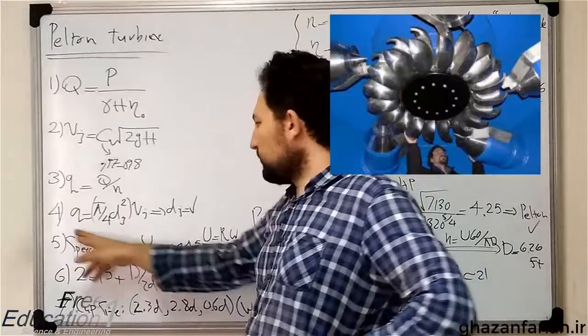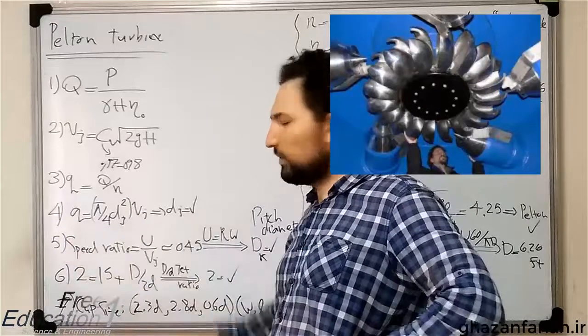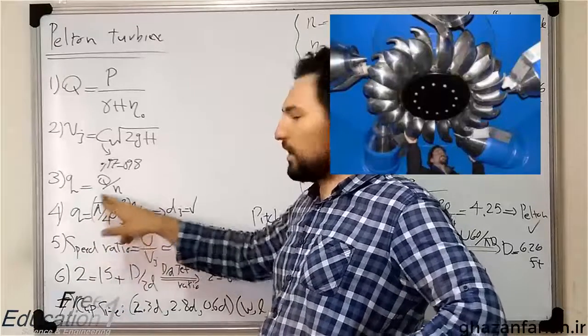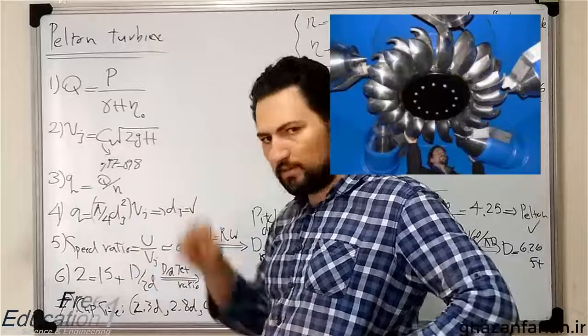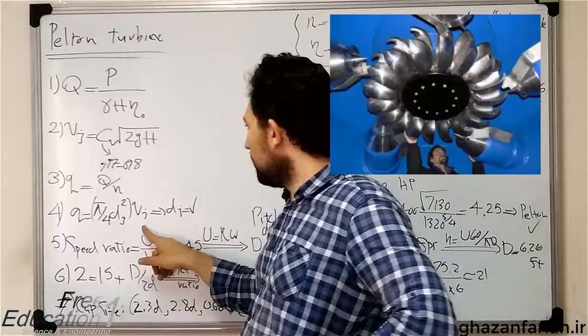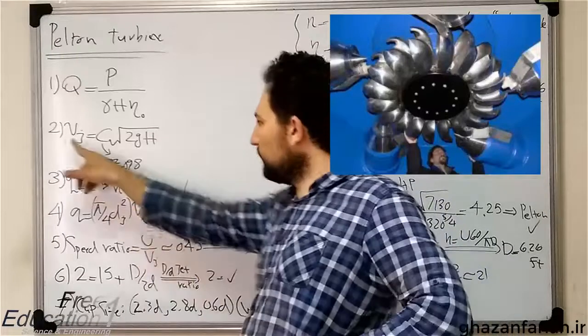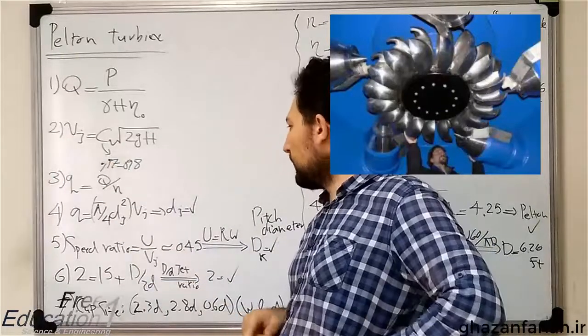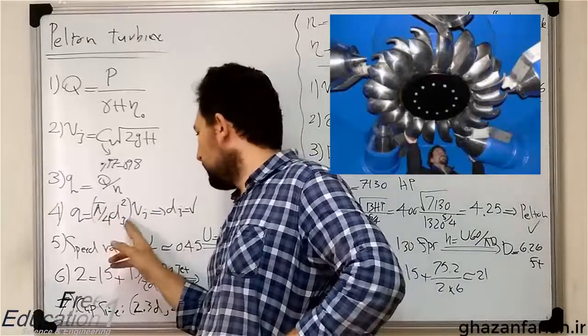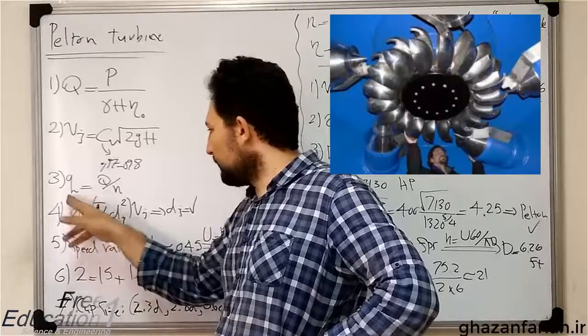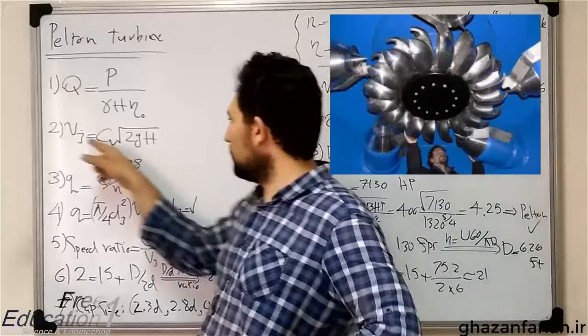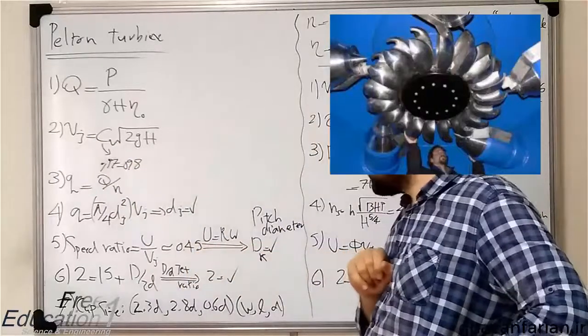Then, using the conservation of mass or the formula for the flow rate, Q equals the cross-sectional area of the jet. D sub-j is the diameter of the jet and Vj is the velocity of the jet, which is computed in the second step. Again, using this relation, you can compute the diameter of the jet using the computed flow rate of each nozzle and the velocity of the jet in item 2.